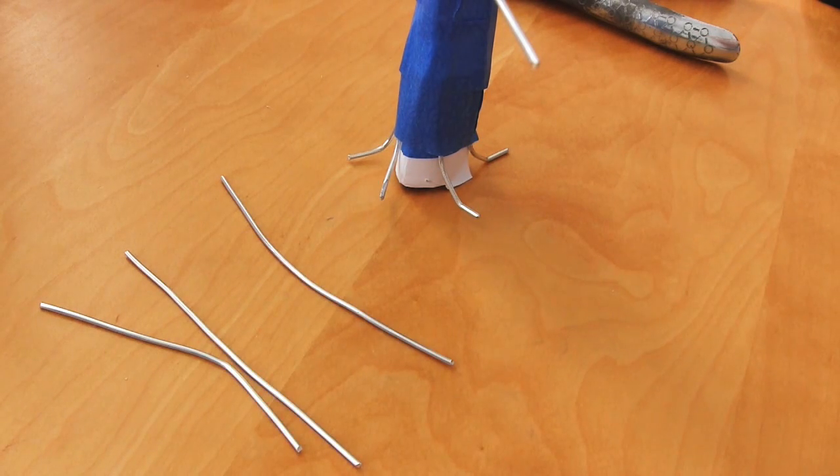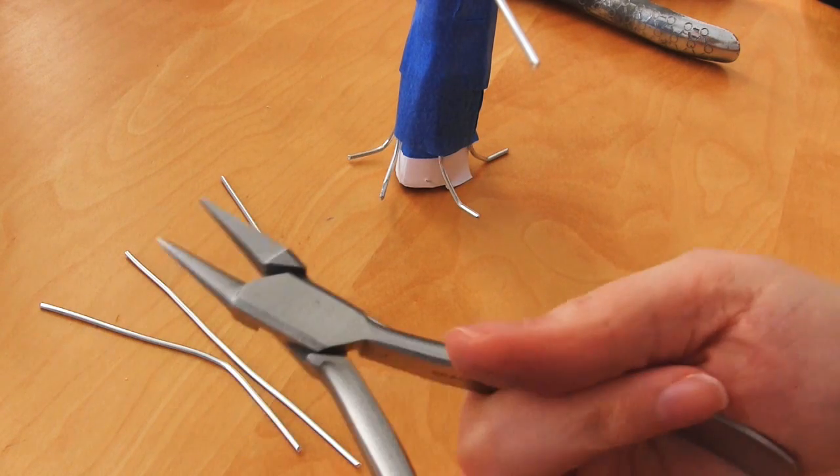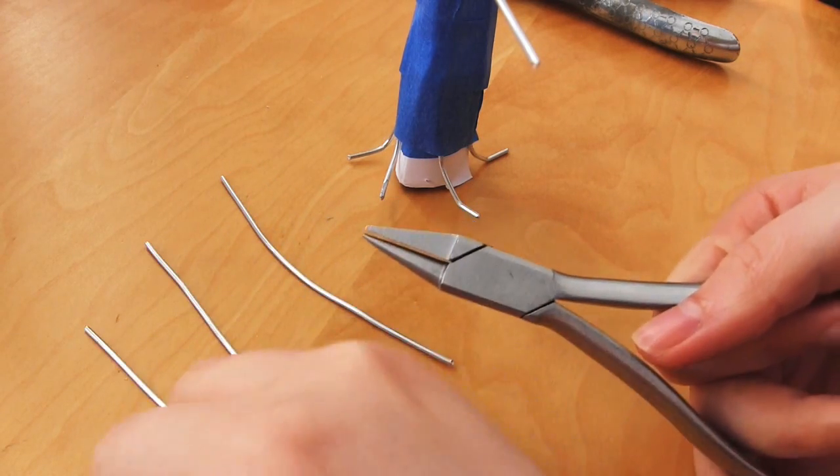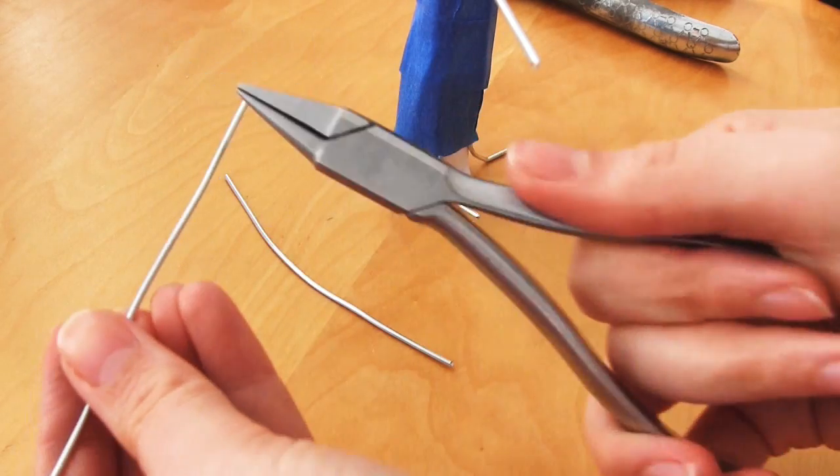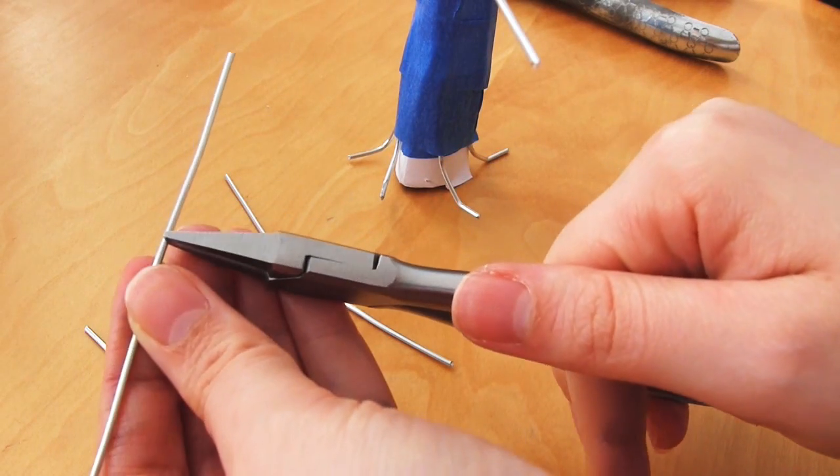And now we're going to add the small sized branches that are going to come off the larger branches. So I start by cutting short pieces of wire. And I added four of these smaller branches in total.